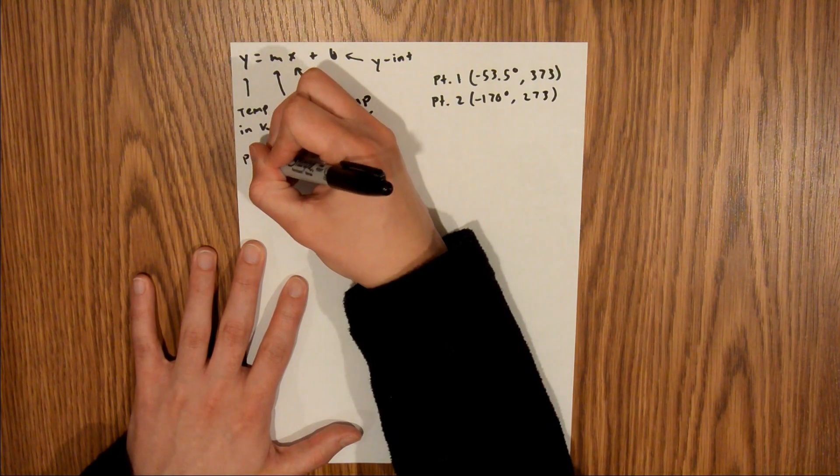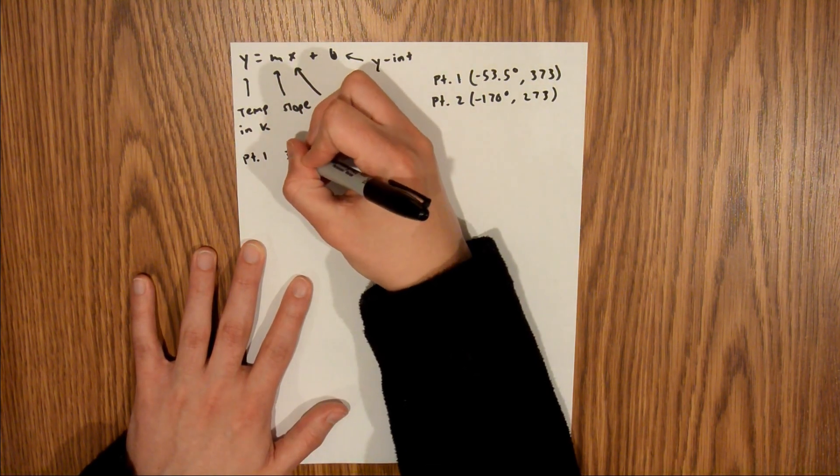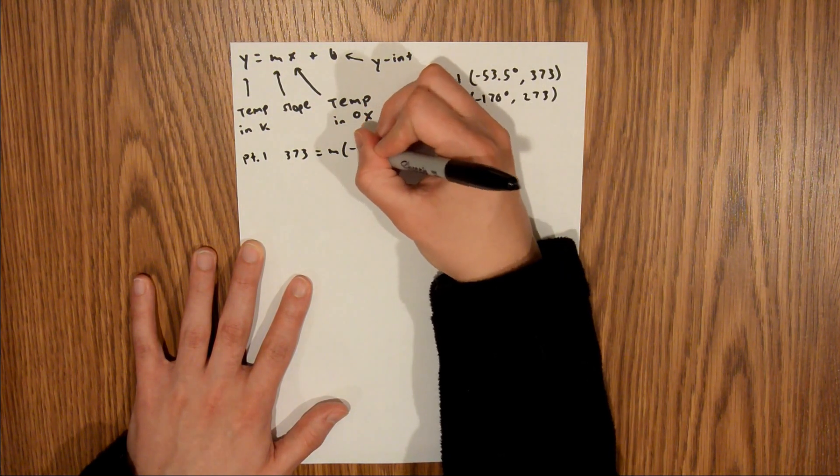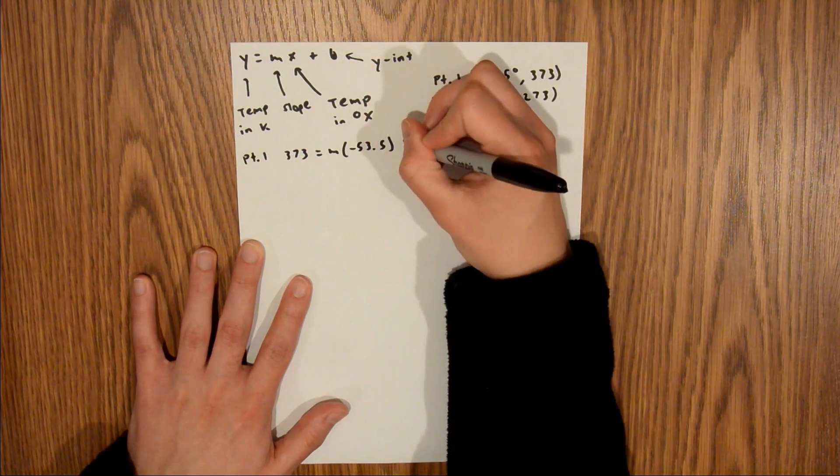Starting with point 1, we will have 373 is equal to m times negative 53.5 plus b.